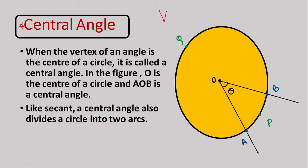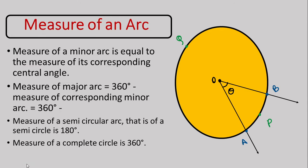Just as a secant cuts the circle into two parts, a central angle will also cut the circle into two arcs. In our figure, the two arcs formed are arc APB — the part inside the angle — and arc AQB, the remaining part. So like a secant, a central angle divides your circle into two different arcs.